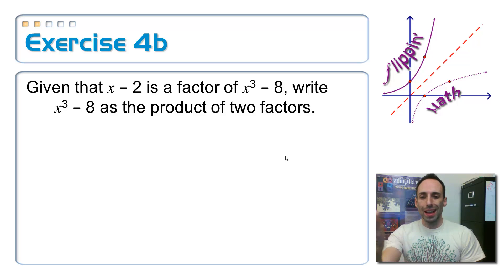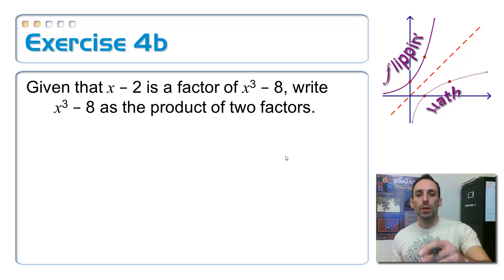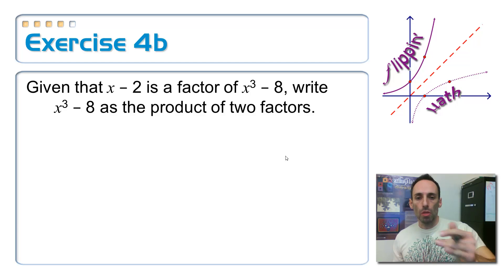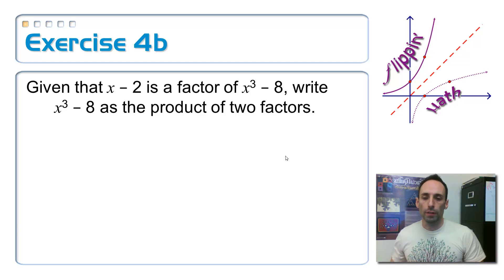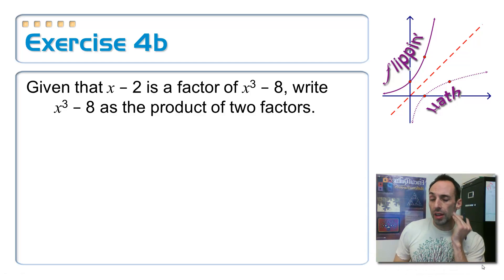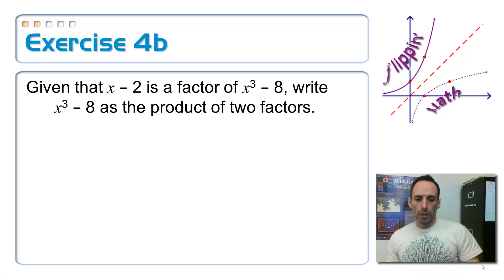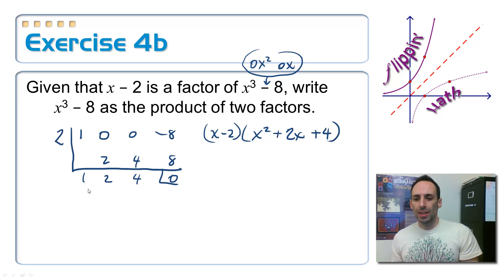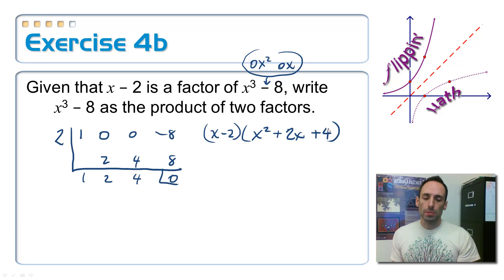Now let's look at x minus 2 being a factor of x cubed minus 8. Go ahead and pause and do the same kind of thing we just did — see what the quotient looks like and figure out the pattern. Did you notice a similar pattern? This is what you should have gotten: we're missing the x squared and x terms again, so we put zeros in. By synthetic division, the coefficients are 1, 2, and 4, giving us x squared plus 2x plus 4.